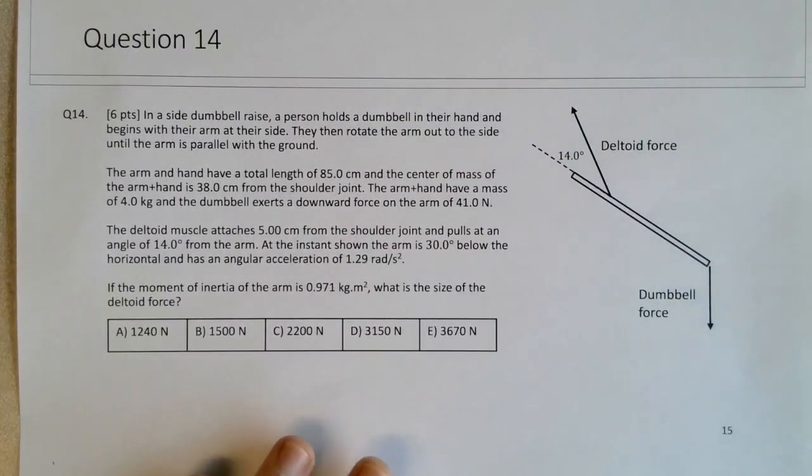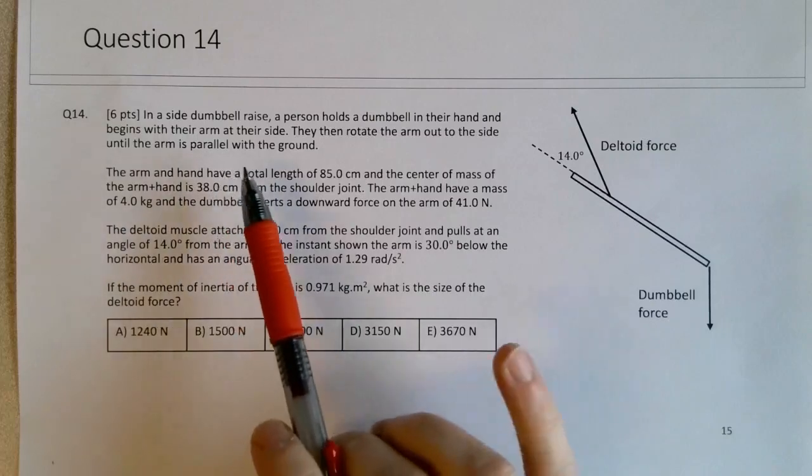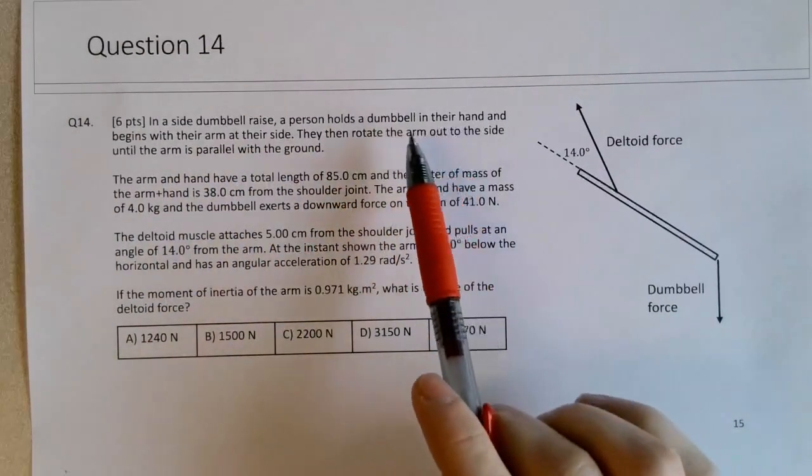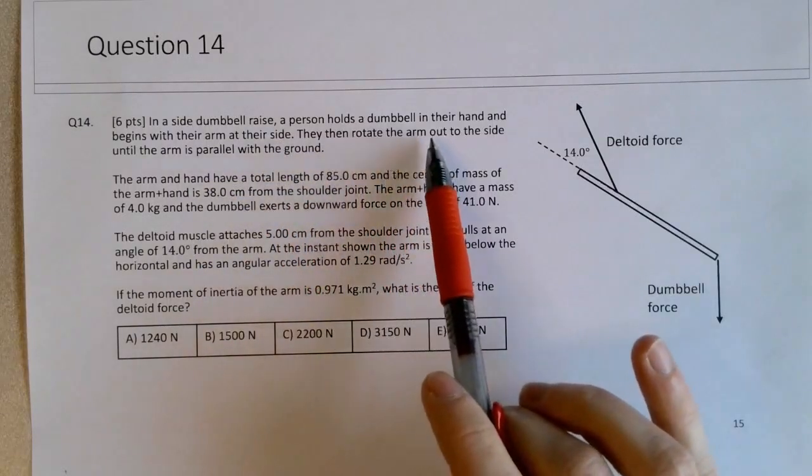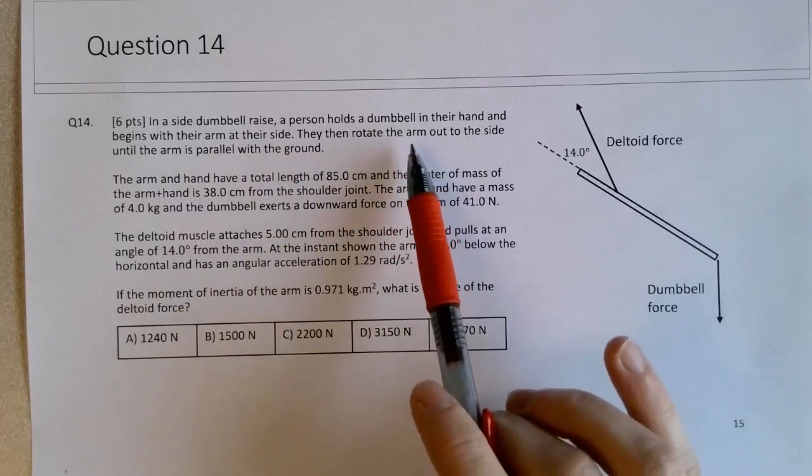Okay, so in question 14, we have a sort of biological dynamic rotation dynamic problem. It's a side dumbbell raise, that's the context. The person holds the dumbbell in their hand and begins with their arm at their side, then they rotate the arm out to the side, working the shoulder muscle, working the deltoid.